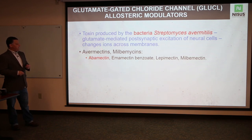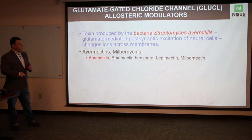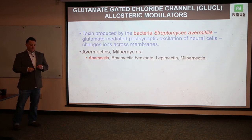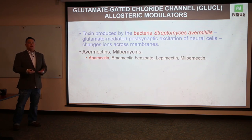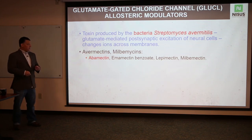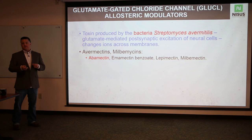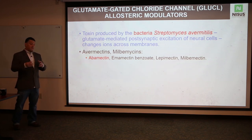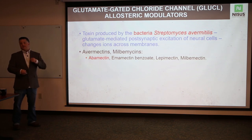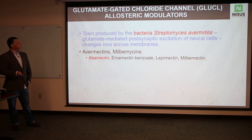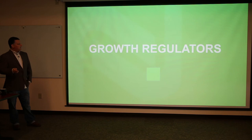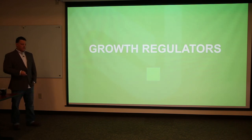Abamectin is also derived from bacteria and is commonly found in dry flowable cockroach baits. It needs to be somewhat ingested — it's not typically used as a liquid in our industry because it breaks down fairly quickly in the environment. In bait form it stays stable; once the insect consumes it, it works to find the target site.